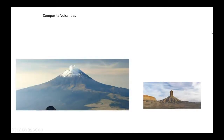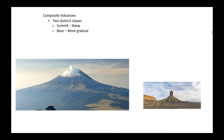Next up, we have composite volcanoes. Composite volcanoes have two distinct slopes. Near the summit, the slope is quite steep, and as you get down towards the base, it becomes more gradual. You can see that here — it's very steep at the summit, then it breaks and becomes more gradual toward the base.